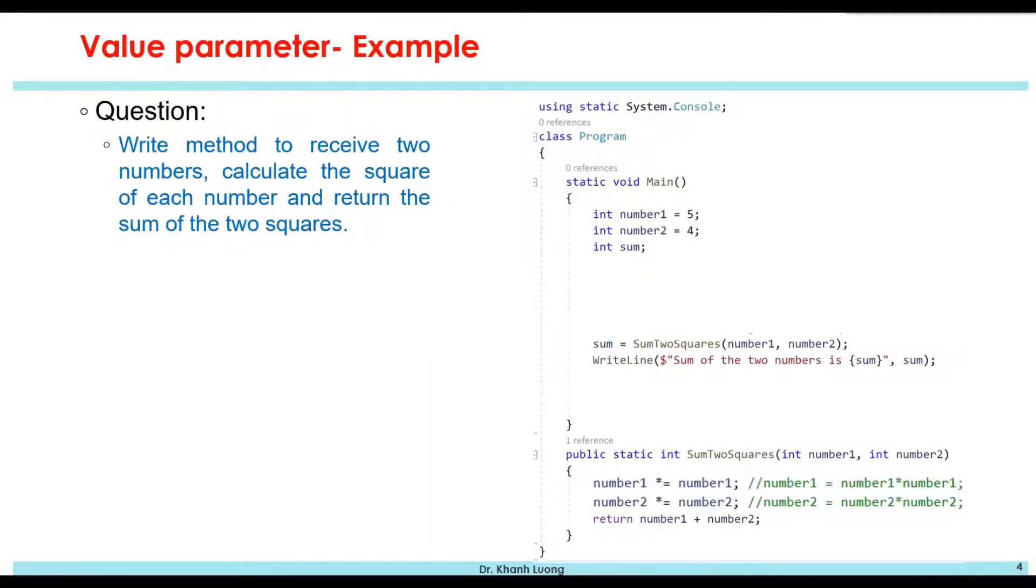Let's see the following example. We want to write a method that receives two numbers, calculate the square of each number and return the sum of the two squares.